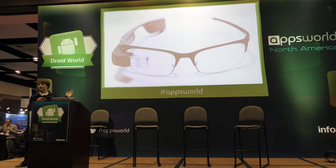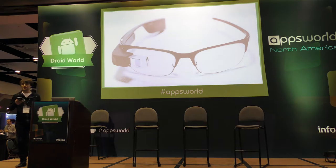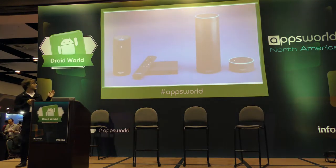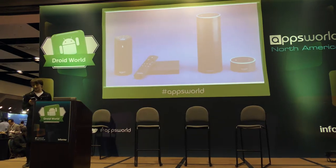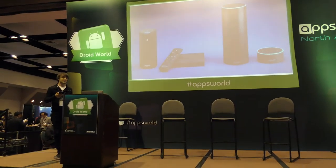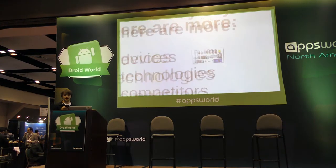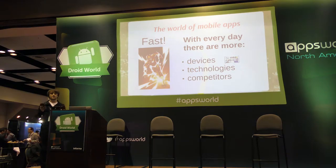Different things like Google Glass — not a lot of us have used it or touched it, but we read news about this. This is the future that is going to come. Some smart things to make your home smarter — this also can be an extension to your application someday. The next thing: new technologies. We'll talk about this a little later. And competitors.